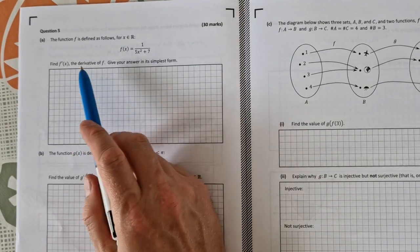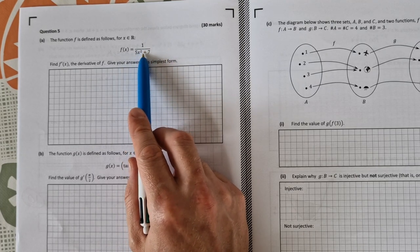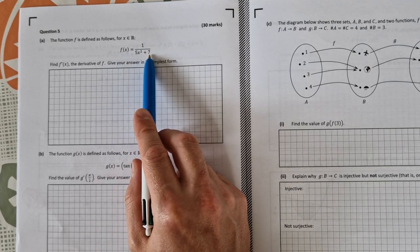Part A we're asked to find the derivative of the function f of x where f of x is equal to 1 over 5x squared plus 7.